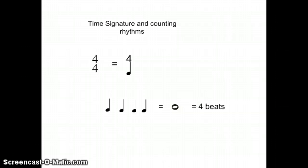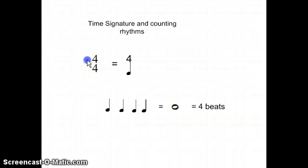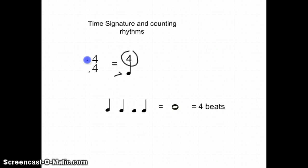The top number in a time signature tells us how many beats are in each measure. The bottom number of a time signature tells us which note value gets the beat. In a 4/4 time signature, we are being told that there are a total of 4 beats in each measure, and we are counting quarter notes. This is the same thing as saying we need a total of 4 quarter notes in each measure.